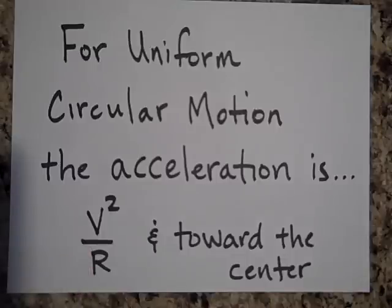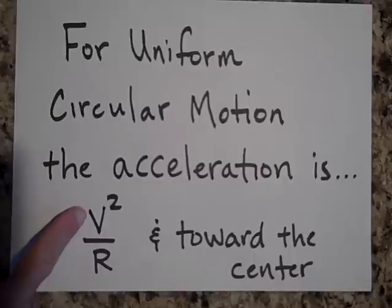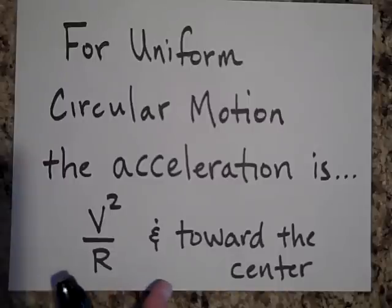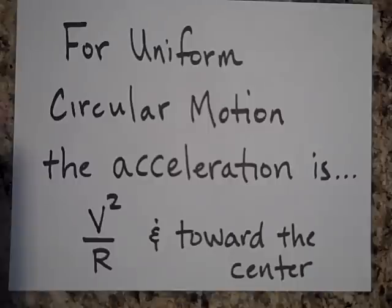The acceleration's magnitude is going to be the speed of the object moving in circular motion, squared, divided by the radius of the circle. And it's always toward the center.